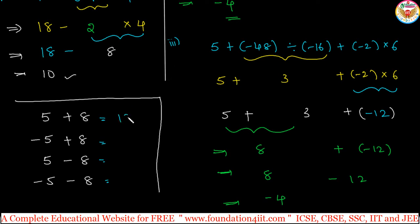5 plus 8 is 13. Minus 5 plus 8 is plus 3 because 8 is the bigger. Minus 5 plus 8 or 8 minus 5, that is 3. 8 minus 5 is 3, but 5 minus 8 is negative 3, that you remember. And minus 5 minus 8 is minus 13, because both are negative. We will keep negative sign and add.